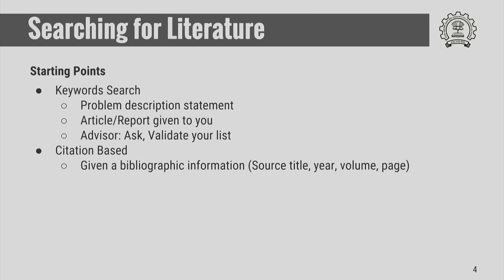The other important method of searching literature is citation-based. That is, given a particular bibliographic information — which includes the source title, author, year, volume, and page — you look up that particular article in one of the search engines and then build up literature related to it.